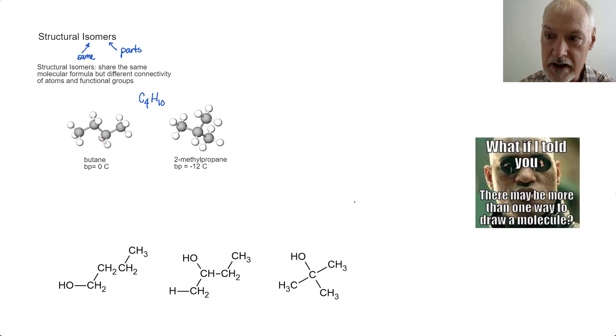For example, in this case, the carbons are arranged in a chain, or a straight chain. And here, we have a branched arrangement. This different connectivity results in different physical properties. I can see here a difference in the boiling points of the two.